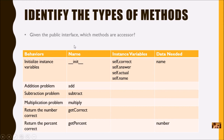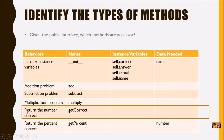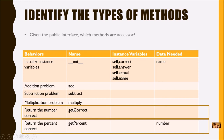Given this public interface, which methods are accessors? By process of elimination, or by looking for methods returning values back to the function. We have two of them — the word 'return' is there to help us remember, and the word 'get' in the name is also a good reminder. These two just returned the value back to the function without doing any work.